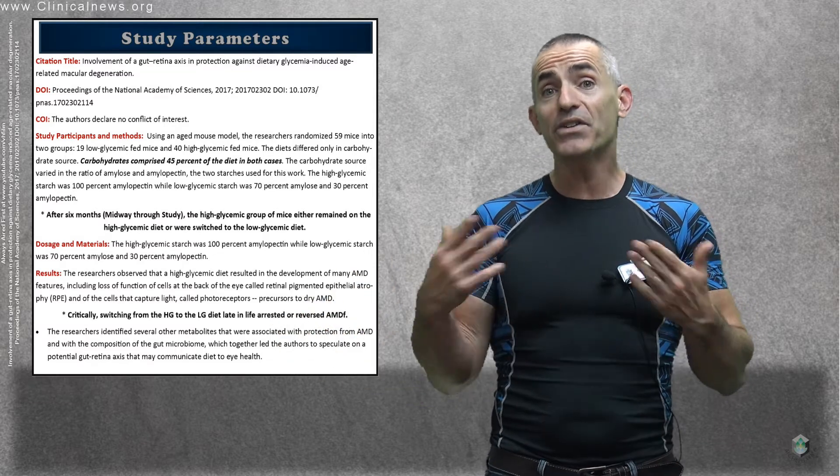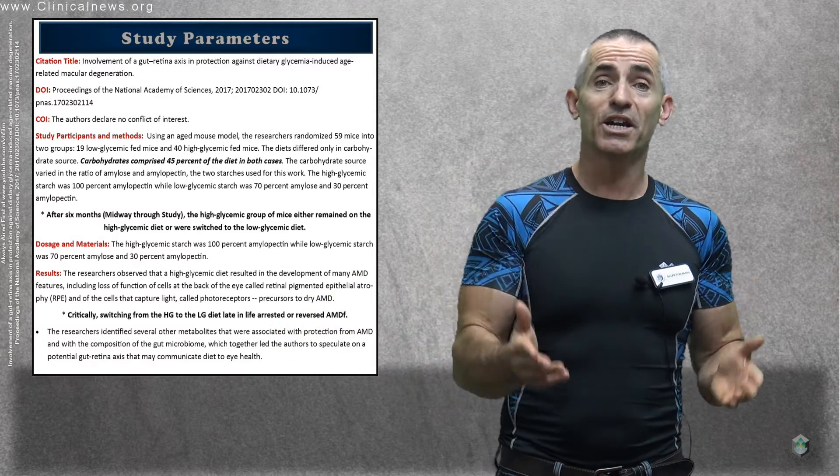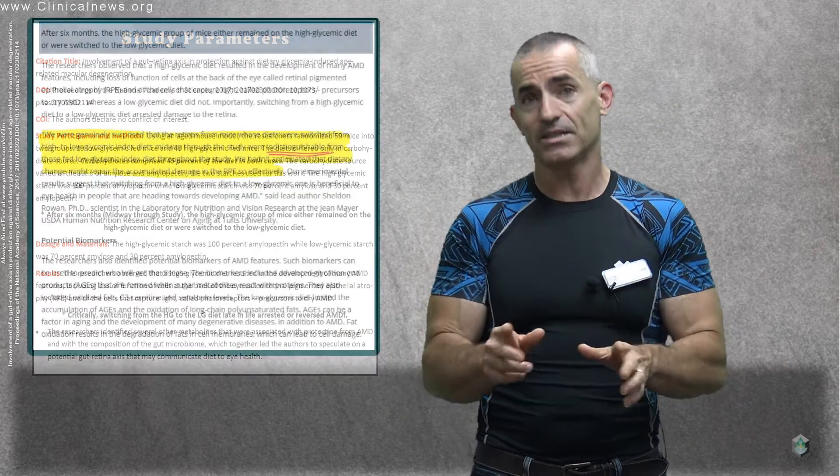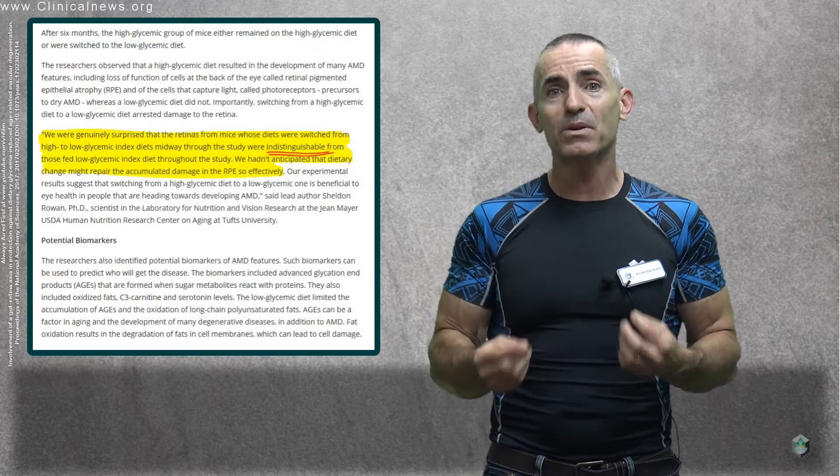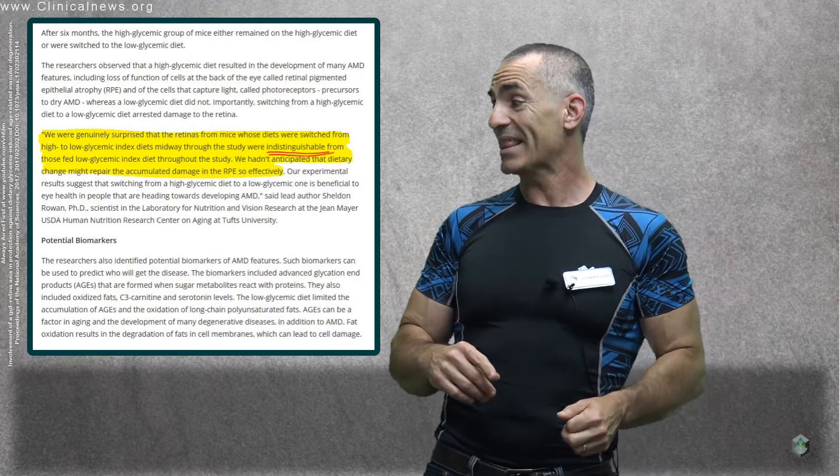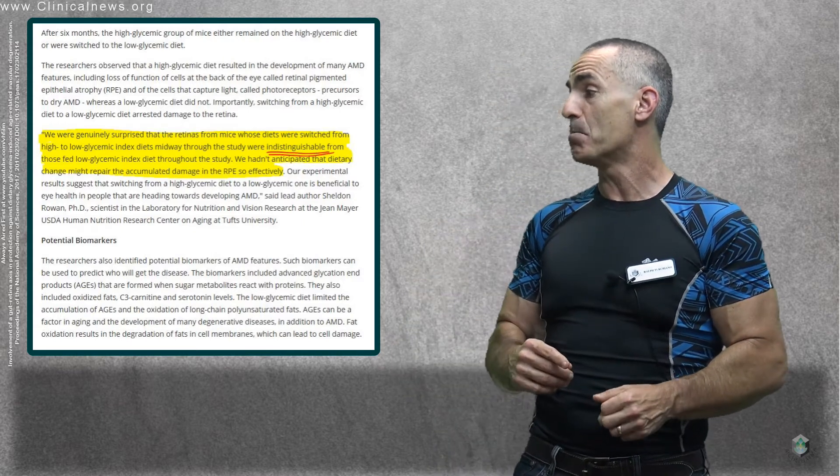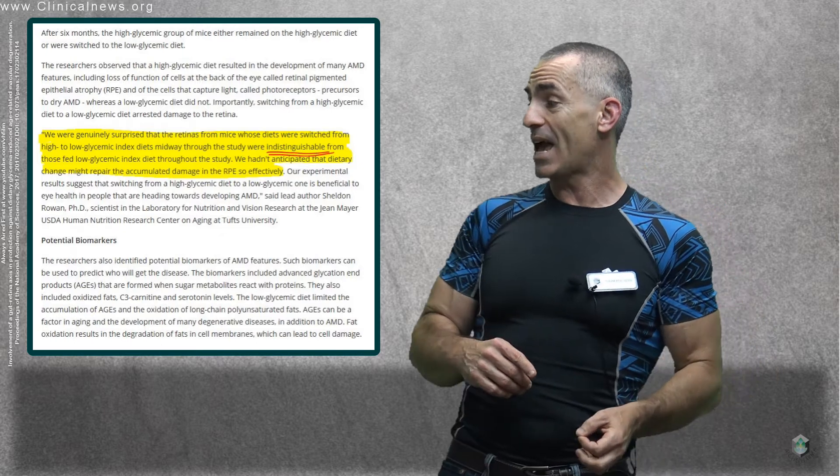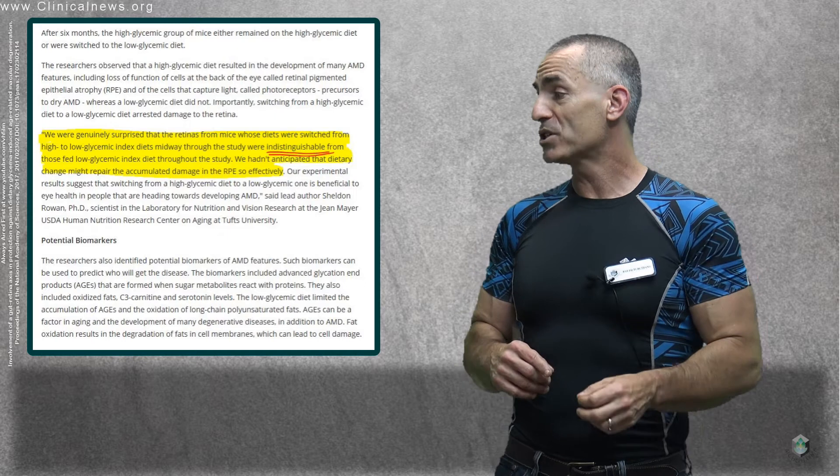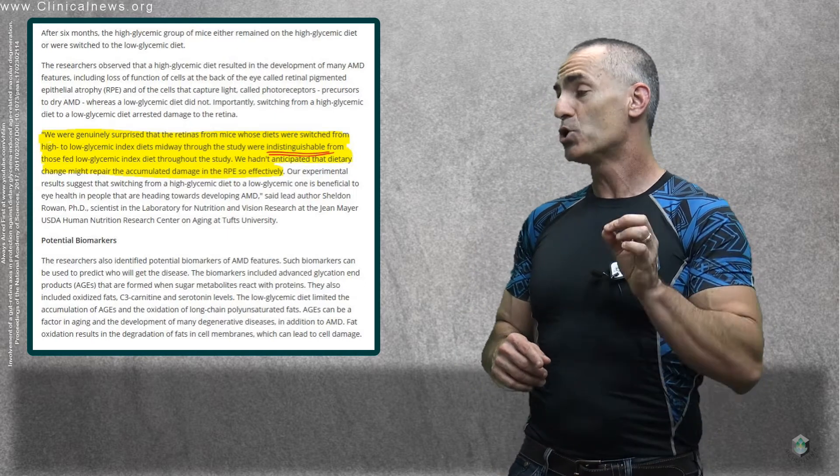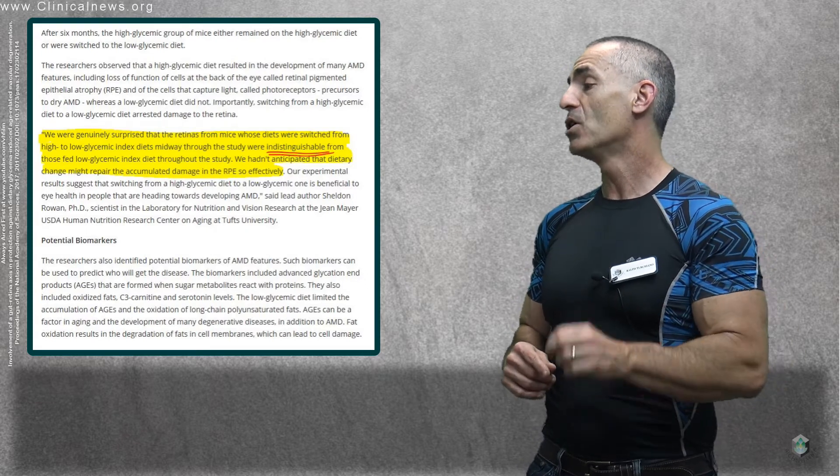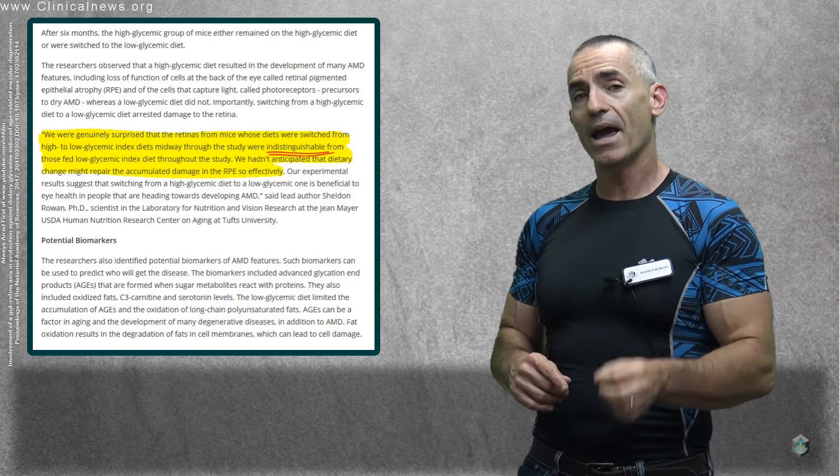Meaning all the damage that was done from a high-glycemic diet to the eye over six months seemed to be reversed altogether just by switching to a low-glycemic diet in the remainder of the study. That is fascinating, meaning there's something going on where the body is capable of self-repair, given the right stimuli. We had not anticipated that dietary change might repair the accumulated damage in the retinal-pigmented epithelial so effectively. Our experimental results suggest that switching from a high-glycemic diet to a low-glycemic one is beneficial to eye health in people that are heading towards developing AMD.